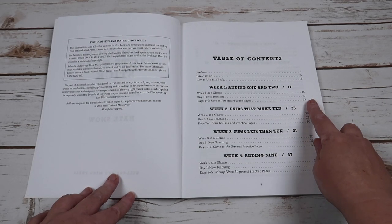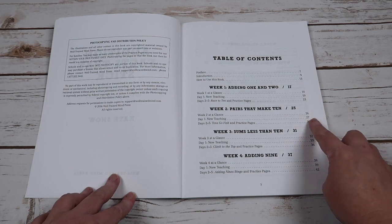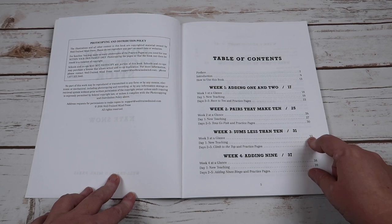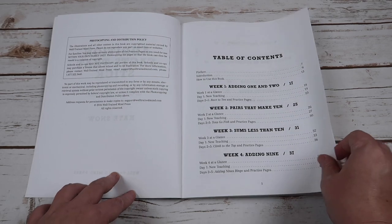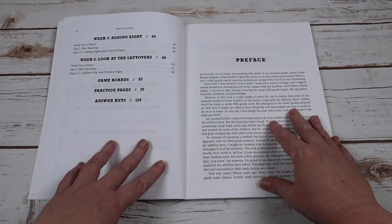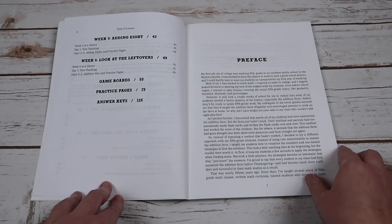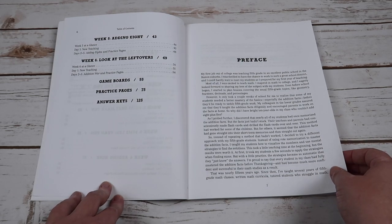So here you can see in week one, you're focusing on one and two. Week two, making pairs, pairs that make 10. Week three, sums that are less than 10. Week four, adding nine. Week five, adding eight, and looking at the leftovers in week six.